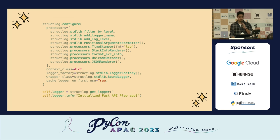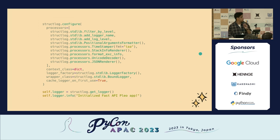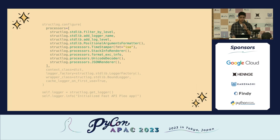To use StructLog, there are a couple of configurations. It normally takes processes — chains of callables through which log entries are processed. We call filter_by_level to filter logs by level, add the log name, and add log levels. We also use a positional arguments formatter, which adds placeholders to your log files, along with timestamps. You format it, unicode it, and add a JSON renderer to convert your log files into a formatted JSON file.